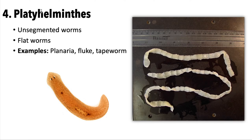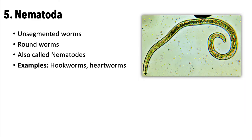Next is Platyhelminthes — the first of our worm phyla. These are unsegmented worms with flat bodies, which is why they're called flatworms. Examples include planaria, flukes, and tapeworms. The second worm group is Nematoda, also unsegmented worms, nicknamed roundworms. The difference is body shape: flatworms are flat, roundworms are round. Examples include hookworms and heartworms.